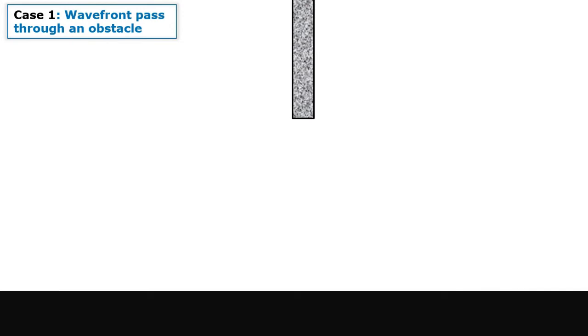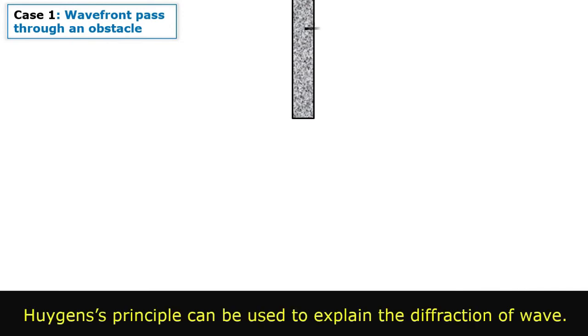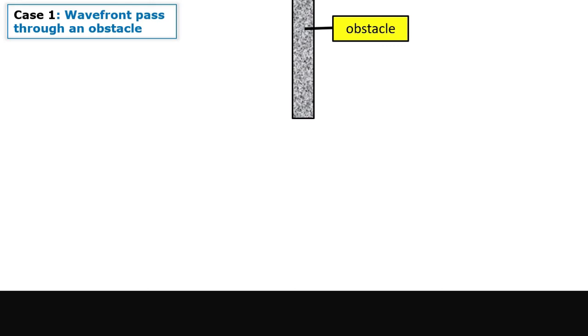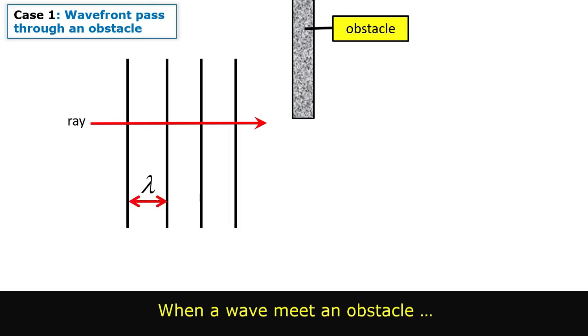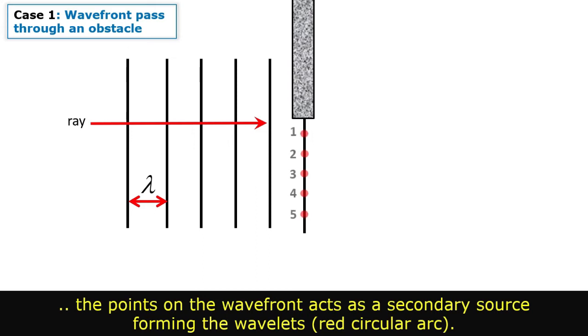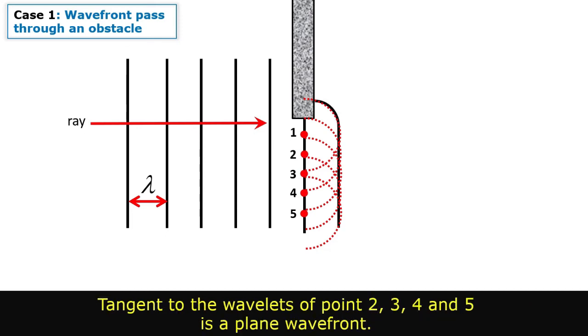Case 1: Huygens' principle can be used to explain the diffraction of wave. When a wave meets an obstacle, the points on the wavefront act as a secondary source forming the wavelets. Tangent to the wavelets of point 2, 3, 4, and 5 is a plane wavefront.